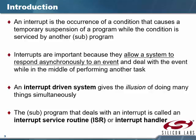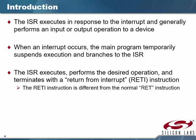An interrupt allows the processor to go off and do something else while in the background monitoring these interrupts. When an interrupt occurs, the processor stops what it's doing and services the interrupt. When done servicing the interrupt, it does a return from interrupt. The interrupt service routine executes in response to the interrupt and generally performs an input or output to the device — it does something to solve the problem.